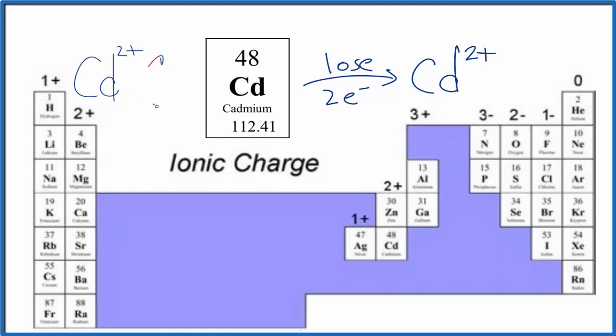Becomes 2+, and you have something like chlorine that normally gains one electron and becomes 1-. So if we have two of these chloride ions here, the charges balance out, and we end up with cadmium chloride. So cadmium normally loses electrons to other elements to become Cd 2+.